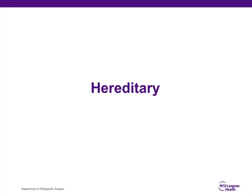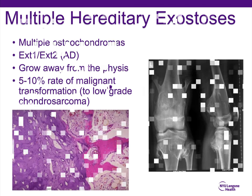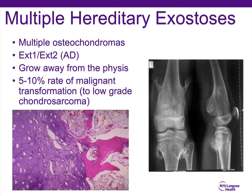Multiple hereditary exostoses (MHE) is one of the most commonly tested hereditary bone tumors, and the EXT1 and EXT2 gene mutation is a frequently asked question. It is an autosomal dominant hereditary tumor. These osteochondromas grow away from the physis, and there is a 2% to 3% rate of malignant transformation — when they do transform, it is into a low-grade chondrosarcoma.